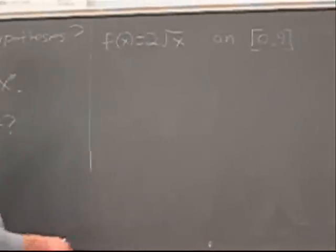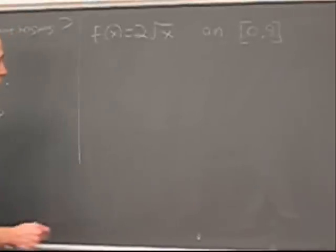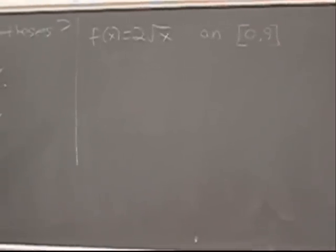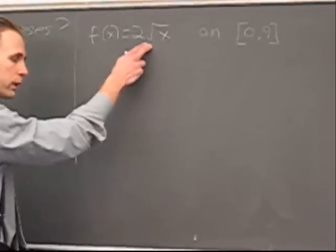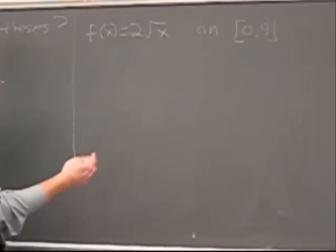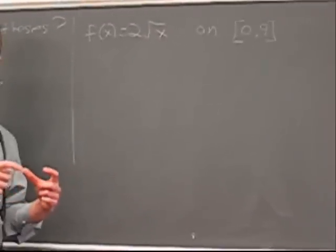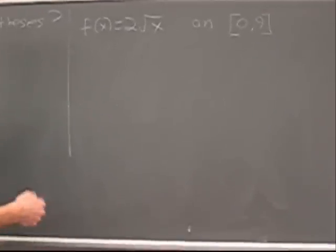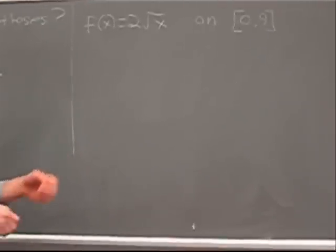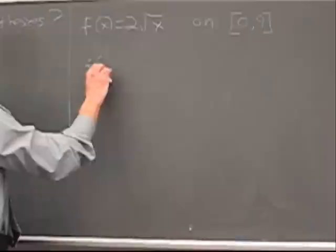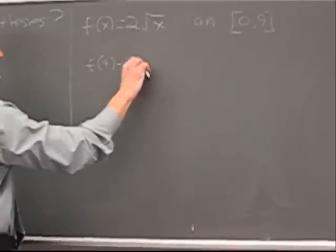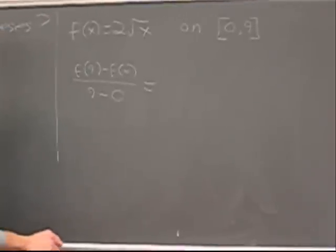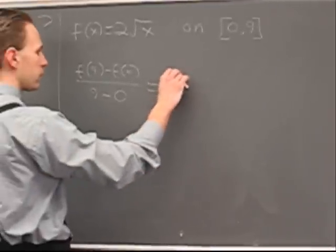We've got this function here, 2 radical x on the interval 0, 9. Does this function satisfy the hypothesis of the theorem? And you say yes, because it is a continuous function and its derivative exists everywhere within the open interval 0, 9. As such, what's the value guaranteed to exist by the theorem? Well, first, we have to get the slope of the line that joins the endpoints. So we need to do f of 9 minus f of 0 divided by 9 minus 0. You work that out,